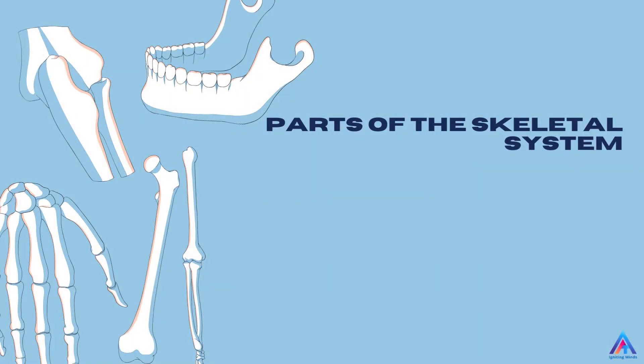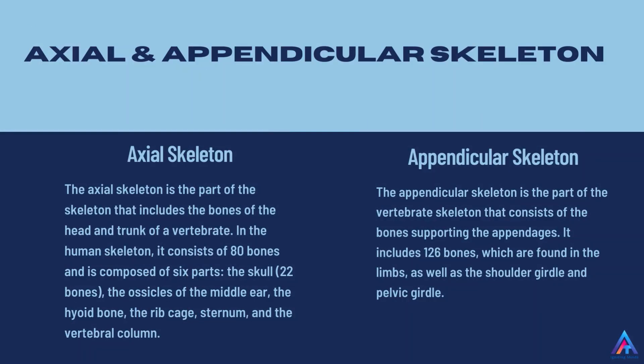Now what are the parts of the skeletal system? Bones are the major part of the skeletal system. It is also composed of cartilages, tendons and ligaments. I will not be talking much about cartilage, tendons and ligaments in this lecture.